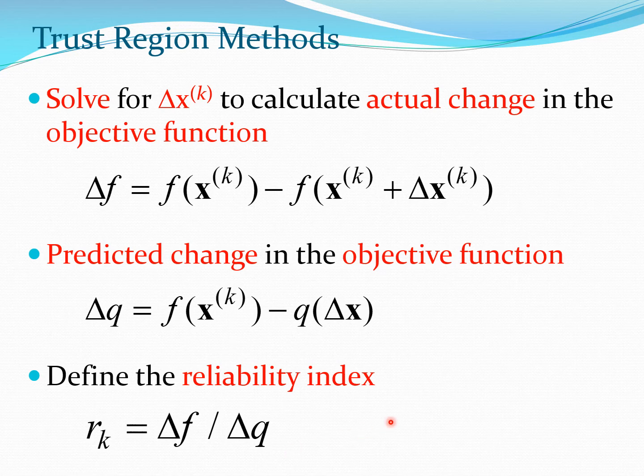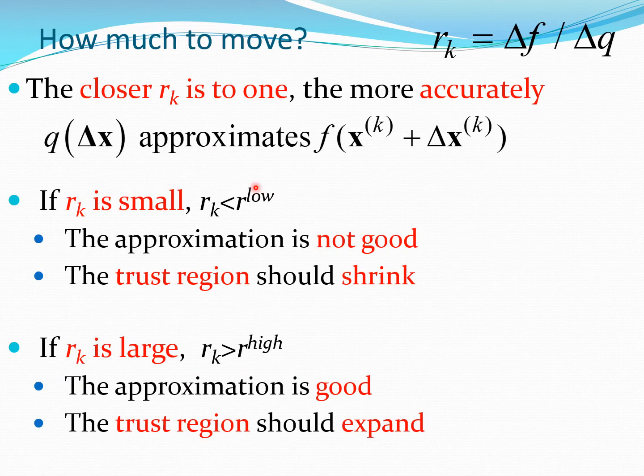Now of course you are going to see here that if your approximation is perfect then your q of delta x would exactly match this value here and your rk would be 1. But in most cases you are going to get a value which is lesser than 1. Now the closer rk is to 1 the more correctly q will approximate the function f at xk plus delta xk.